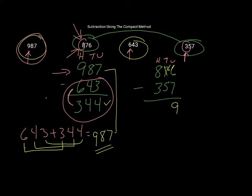And 60 subtract 50 is 10, 800 subtract 300 is 500. And again I would just add these two numbers together and I should get 876 as my final answer.